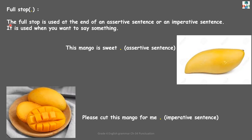Let's talk about this punctuation mark: full stop. The full stop is used at the end of an assertive sentence or an imperative sentence. It is used when you want to say something. For example: 'This mango is sweet.' This is an assertive sentence — when you want to state something. So at the end of this sentence, we will put a full stop.